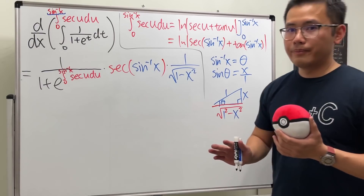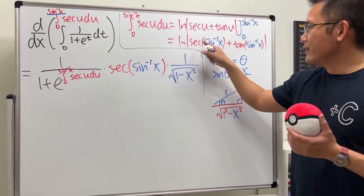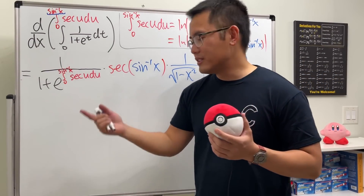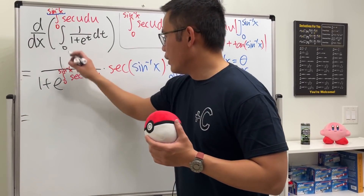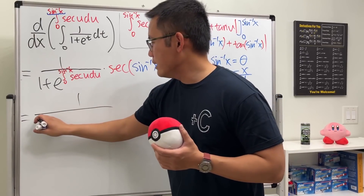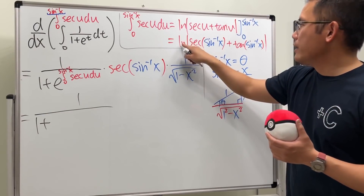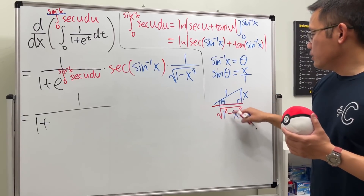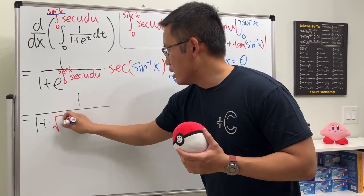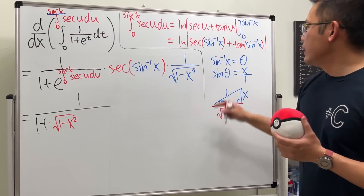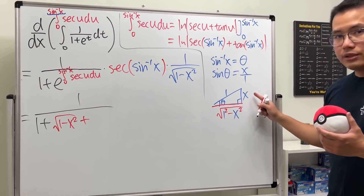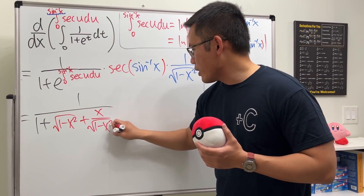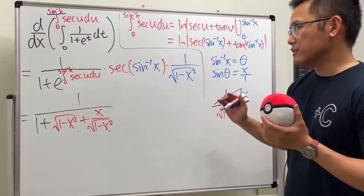Now, we have ln inside, and we are putting this right here, so we have e to the ln — and e and ln cancel. So checking this out: we still have the 1 over in front, and then we add — e and ln cancel — and this becomes square root of 1 minus x squared, and then we add tangent of that, which is x over square root of 1 minus x squared.